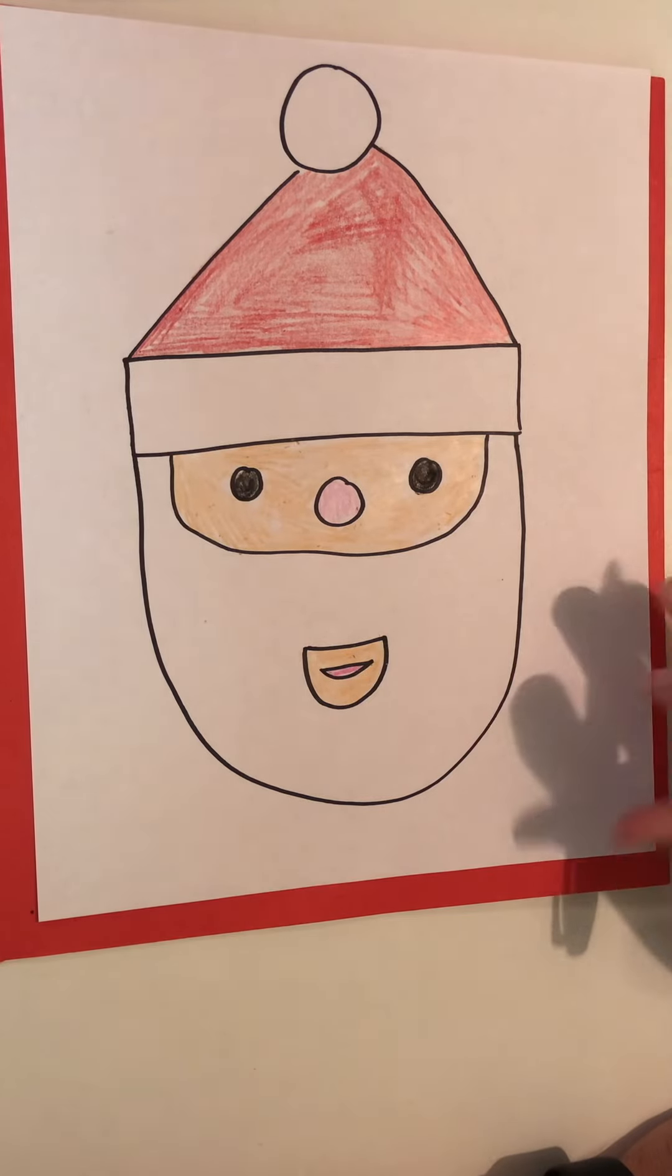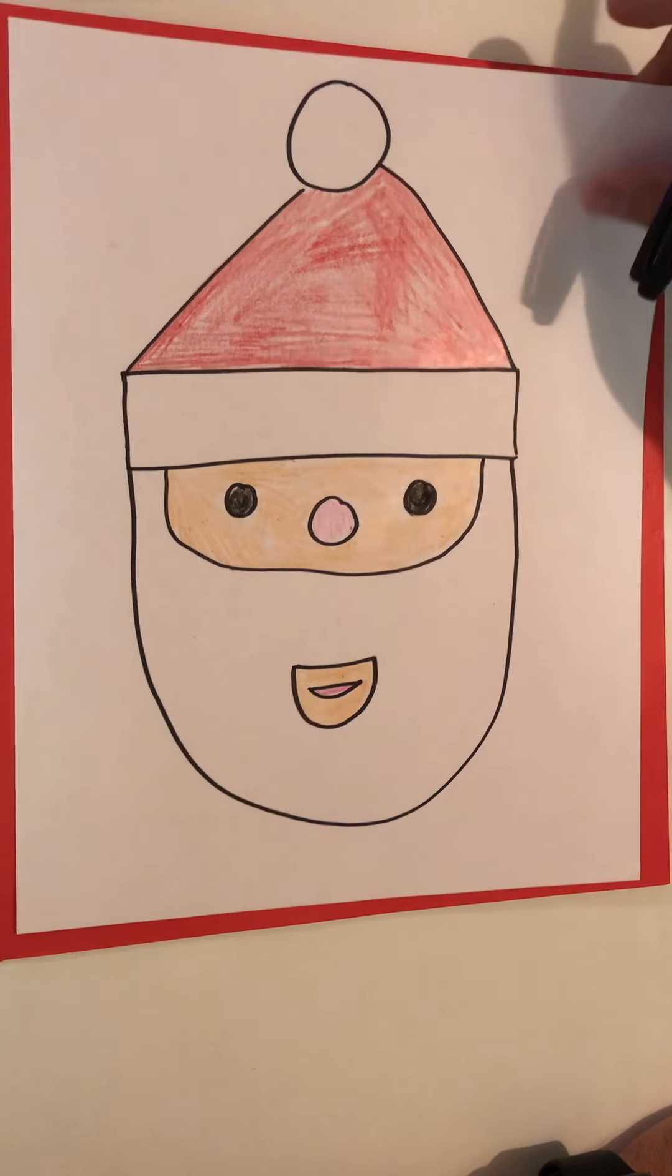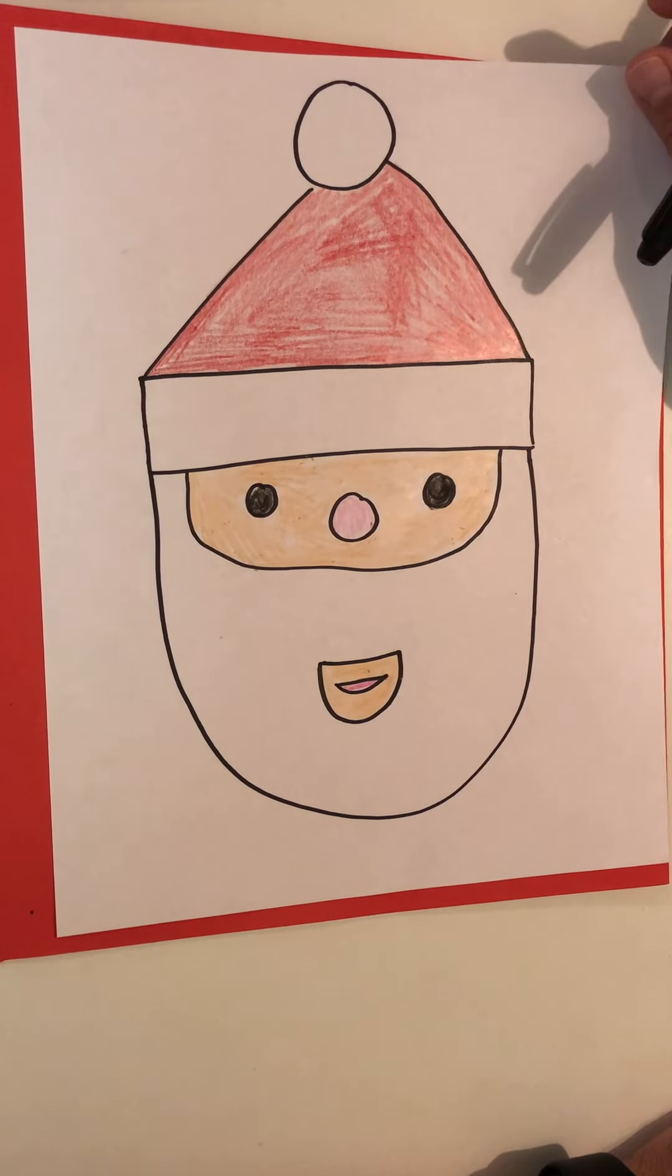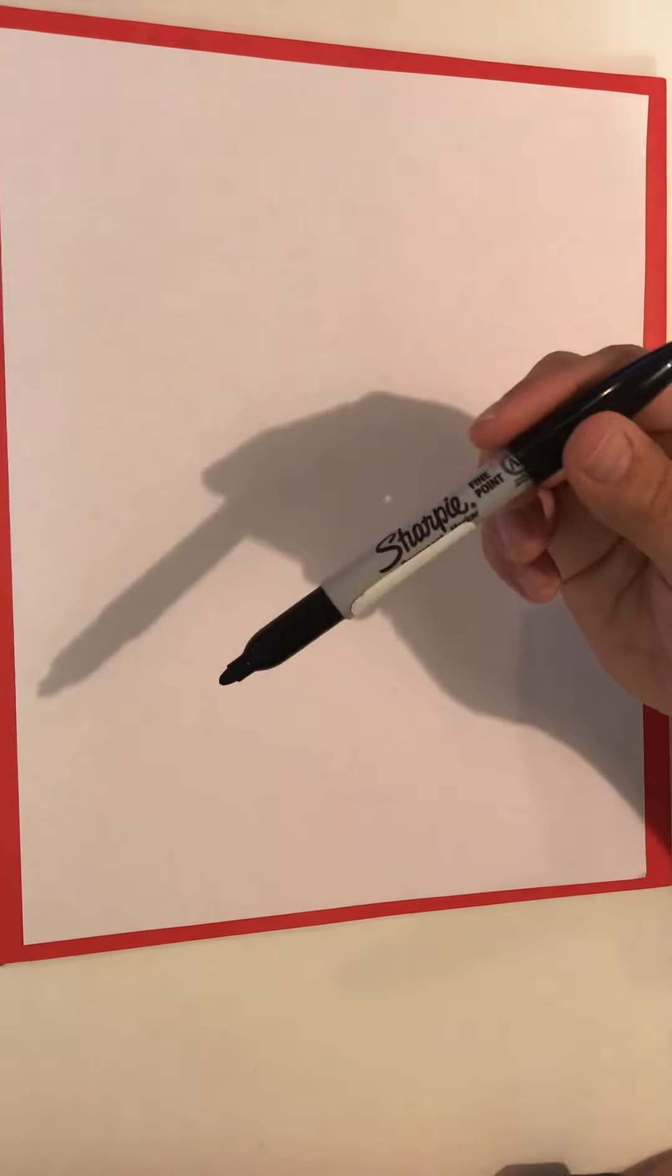I'm going to take you step by step to making our project today. This is the finished product, but let's go step by step together. First things first, let's get our paper and we're going to put it straight up and down just like this. And our first step, we're going to use a black crayon. I'm going to use a marker for this.